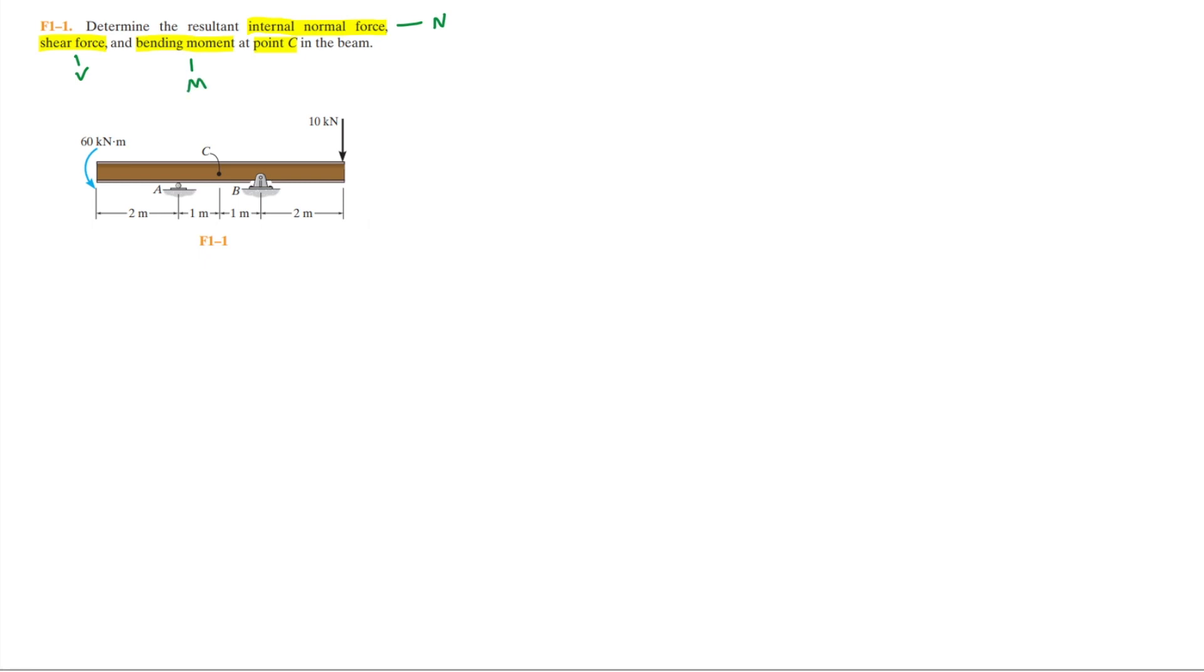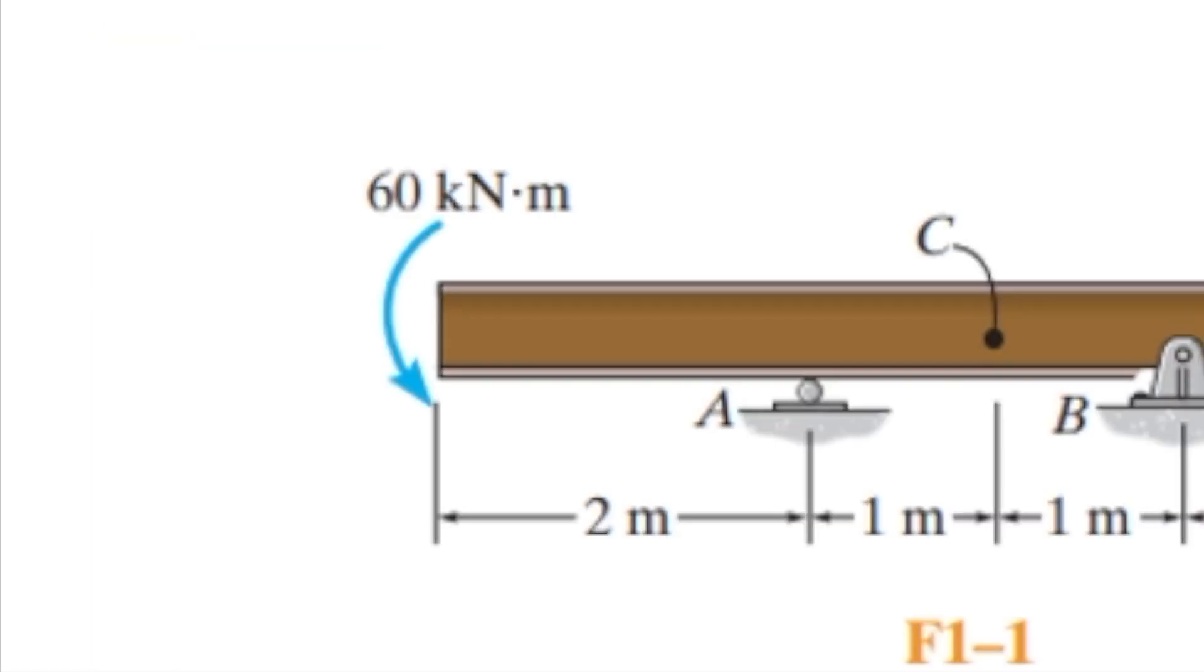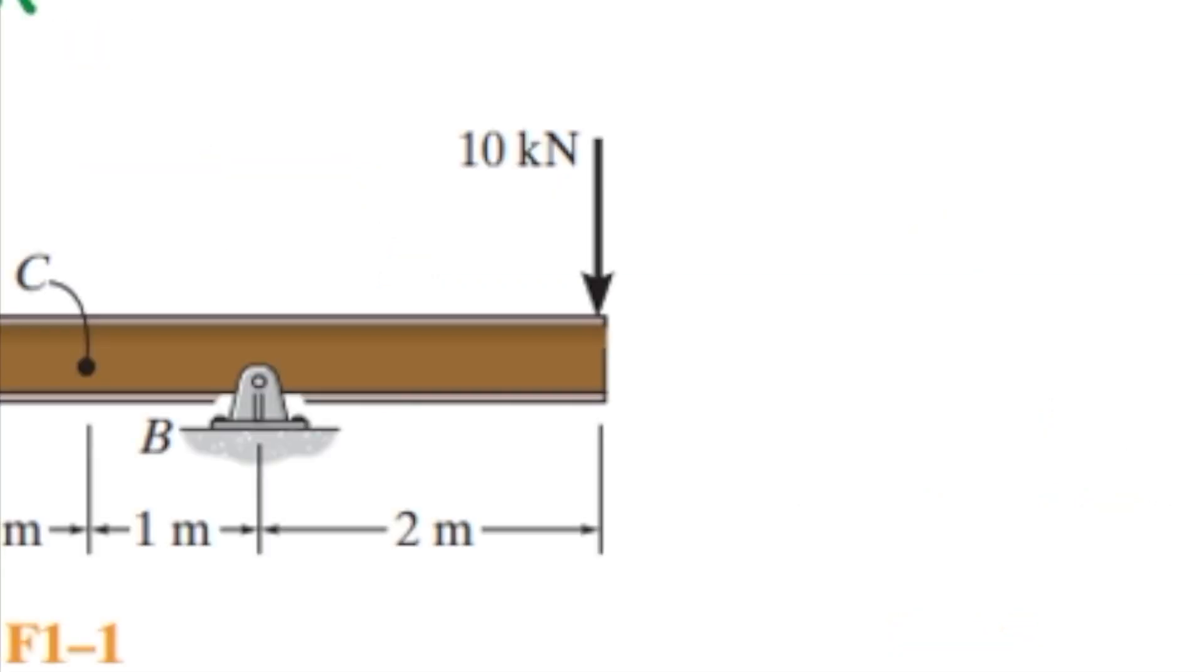Taking a look at the beam, it's supported by a roller at A to the left of C, and a pin at B to the right of C. There is a 60 kNm moment acting on the left end of the beam, and a downward 10 kN force on the right.